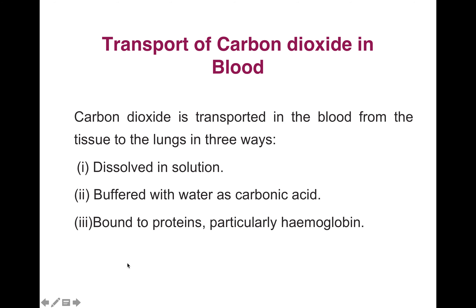Transport of carbon dioxide in the blood from tissue to lungs occurs in three ways. First is dissolved in solution, second is buffered with water as carbonic acid, and third is bound to protein, particularly hemoglobin.